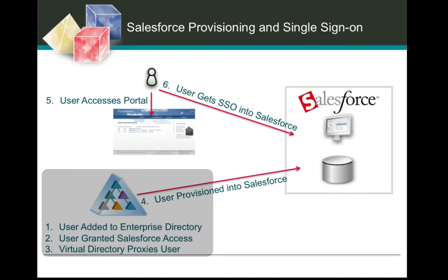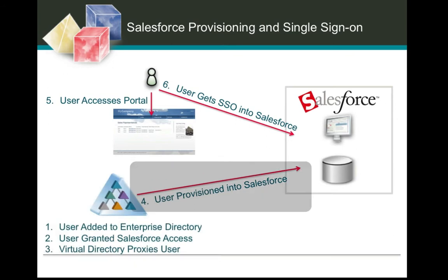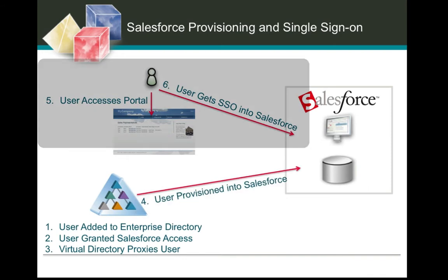This could also have been based upon an LDAP filter. After that's done, the virtual directory creates a view of that user within the enterprise directory that Ping Federate consumes, and uses that information as the details to provision into Salesforce. Once that user has actually been provisioned, they can go ahead and authenticate to the company portal and click a link to get into Salesforce without having to type their credentials.